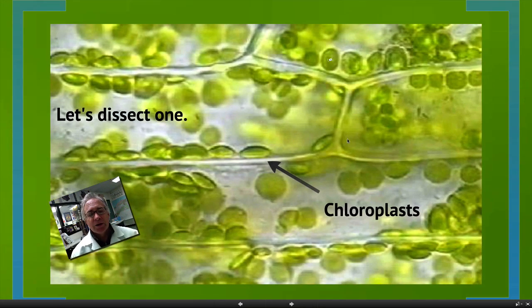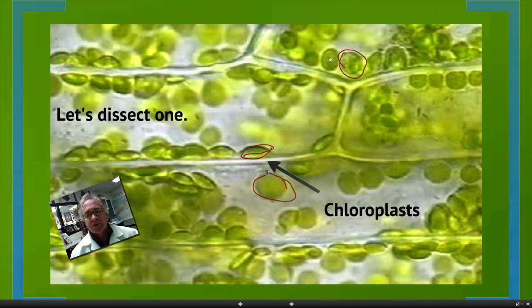When we get a little deeper, we can see the chloroplasts. The chloroplasts are these round little components right here, all of these green things. This is the place where photosynthesis takes place.